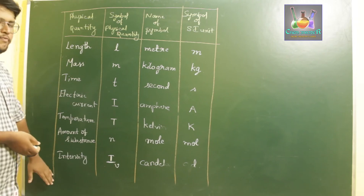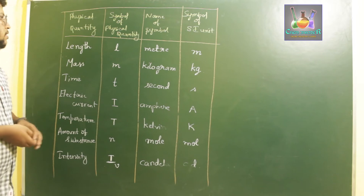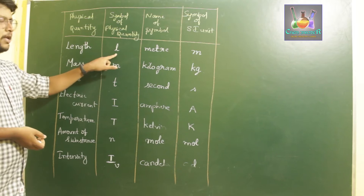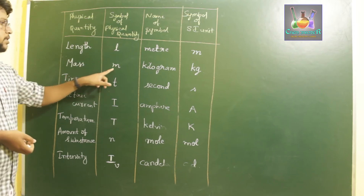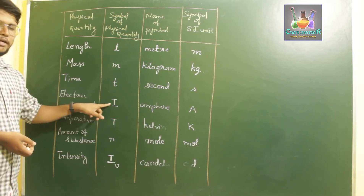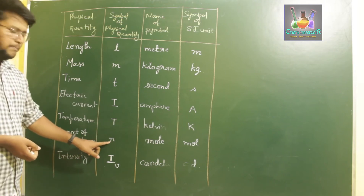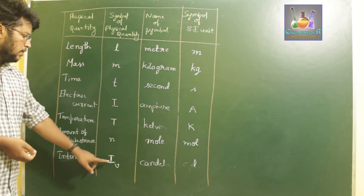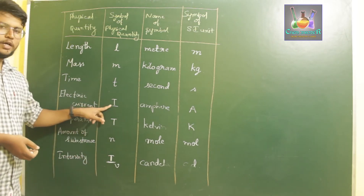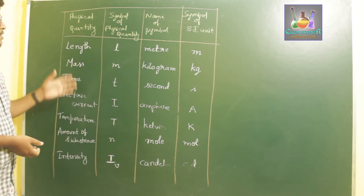The symbols for each physical quantity are: length — L, mass — M, time — T, electric current — I, temperature — T, amount of substance — small m (mol), and luminous intensity — Iv. Don't confuse electric current symbol I with luminous intensity Iv; each physical quantity is given a specific SI unit.